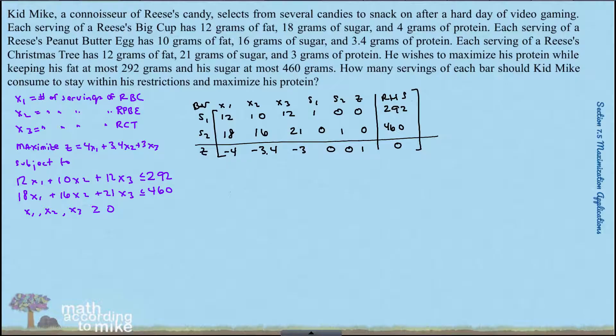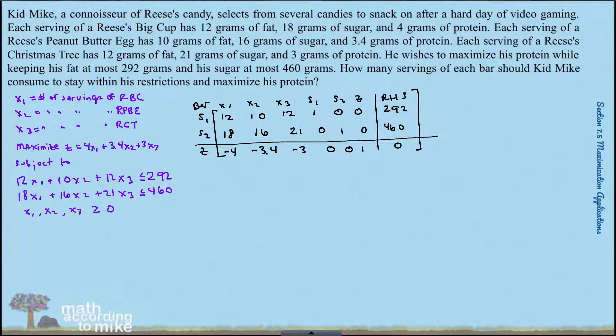Here's one of them, bam! All right, lots of goodness there. So the variables represent the number of servings of each type of Reese's goodness, and we're trying to maximize protein. So the objective function's all about the protein. Yes, I said protein, not protein, it's funnier. And then you have restrictions on fat and sugar.